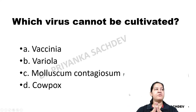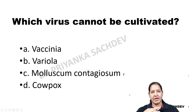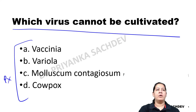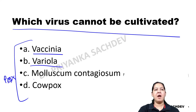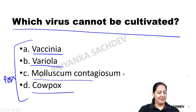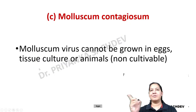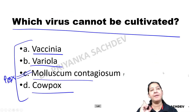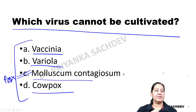MCQ: Which of the following viruses cannot be cultivated? Options: variola, vaccinia, molluscum contagiosum, cowpox. The correct answer is molluscum contagiosum. It cannot be grown in eggs, animals, or tissue culture. This is a repeated exam question.